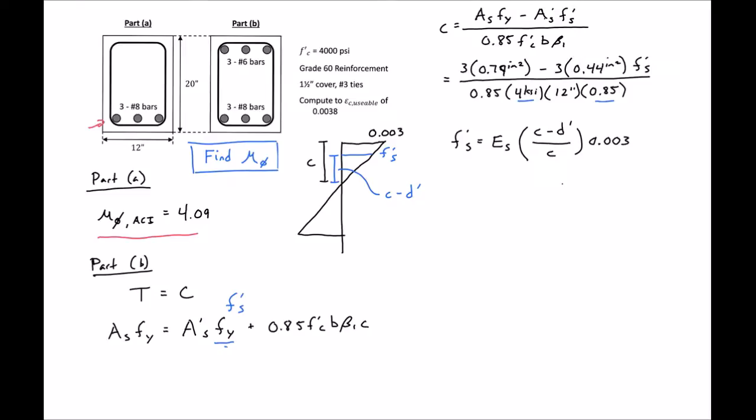And we can find our D prime then. D prime equals 1.5 inches cover, plus 3/8 inch, which is our number 3 tie, plus 3/8 inch, which is half of our number 6 bar. And we'll get this to be 2.25 inches.